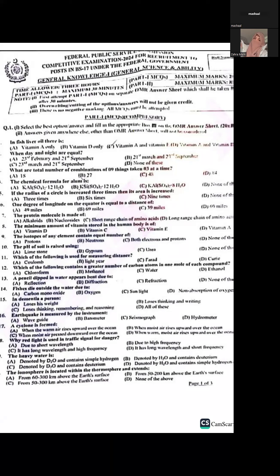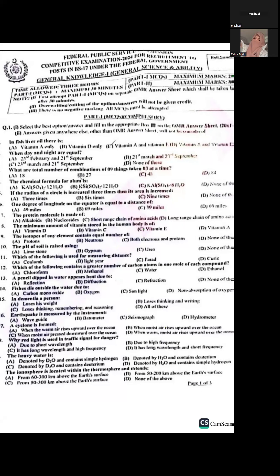Question four: What is the chemical formula for alum? Alum is a white substance used in our kitchen. Its chemical formula is potassium aluminum sulfate dot 12 water (KAl(SO₄)₂·12H₂O).